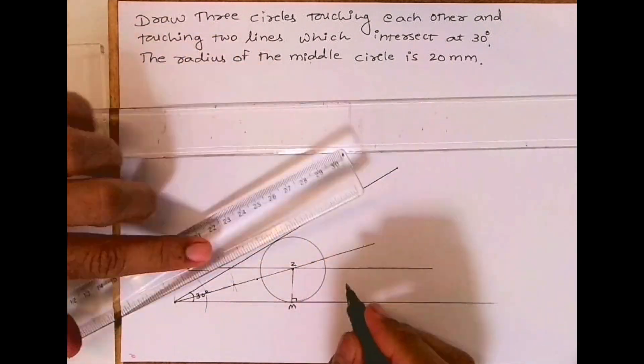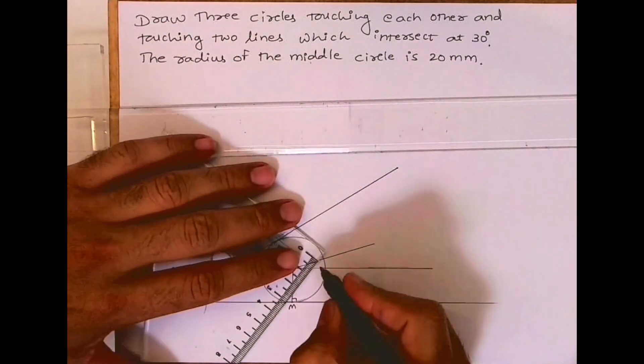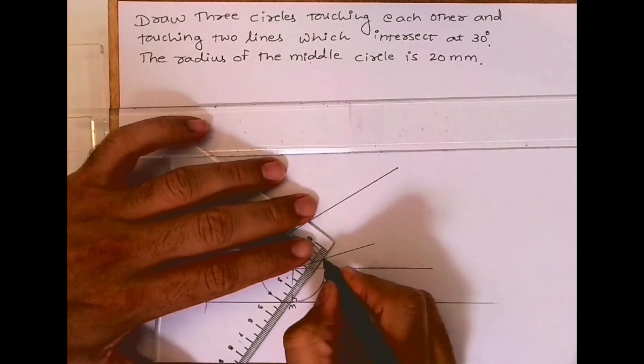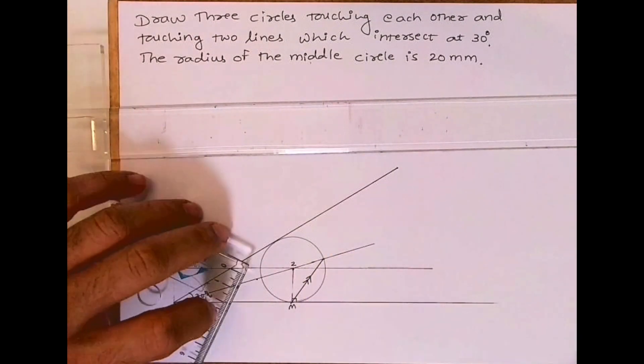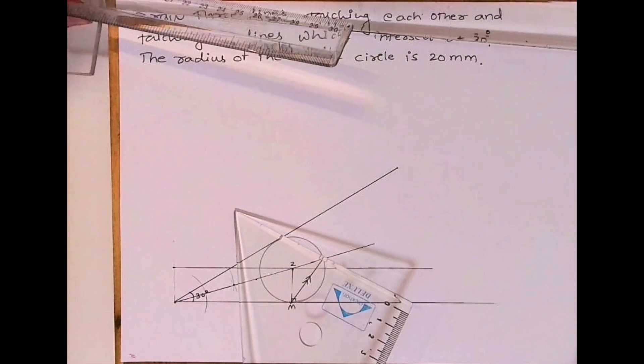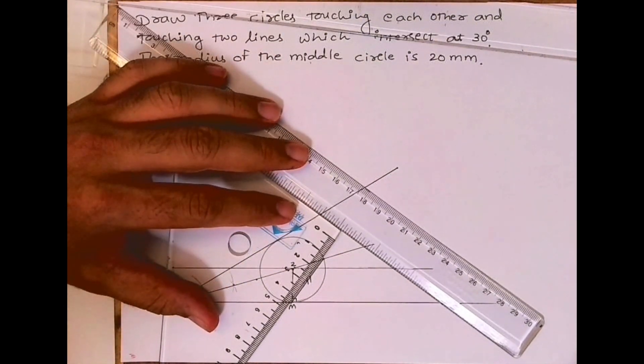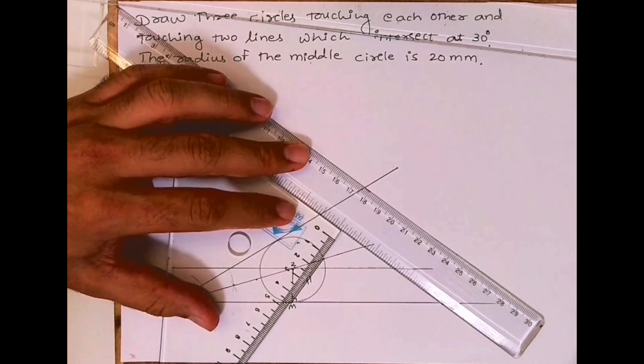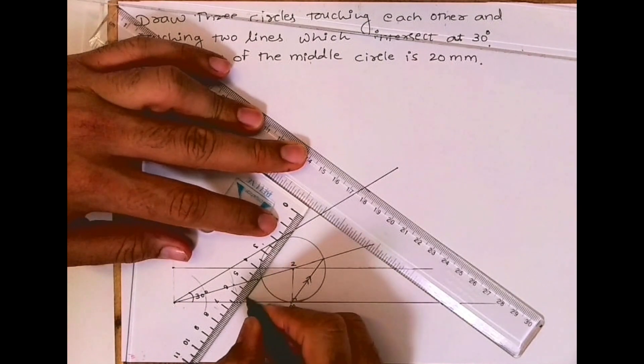After that, extend this line. Now join this to this, see this inclination, and draw a parallel line. We need to draw a parallel line to draw the first circle.